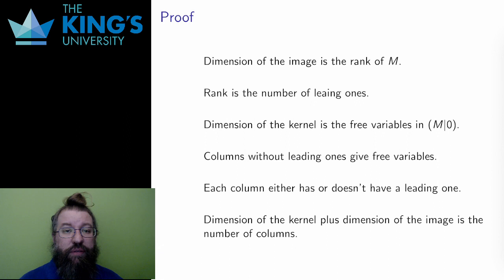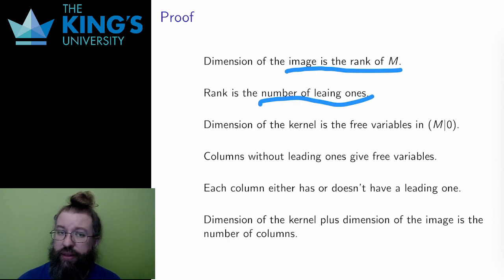Now let me give the argument. The argument is about the dimension of the image and the dimension of the kernel. How do I calculate those dimensions? Well, the image is the column space, and I said that the dimension of the column space is the rank. What is the rank? The rank is the number of leading ones in the reduction of the matrix M. So to get the dimension of the image, I count leading ones.